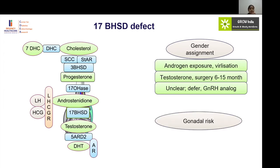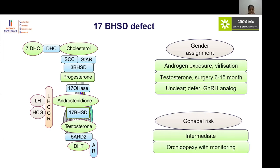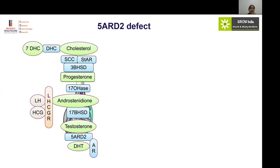The gonadal malignancy risk in 17-beta-HSD defects is intermediate, as the gonads are at the deep inguinal ring. If the patient is to be reared as male, orchidopexy can be done with proper monitoring for malignancy risk.